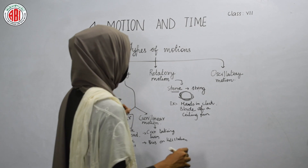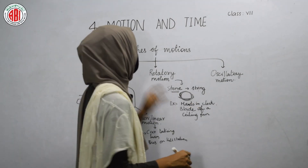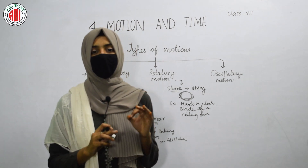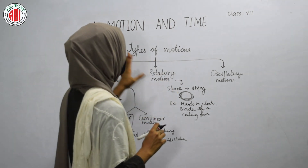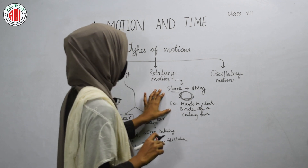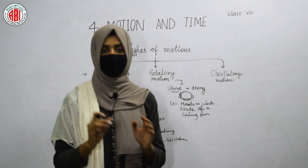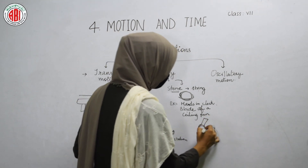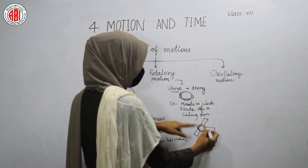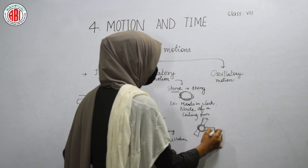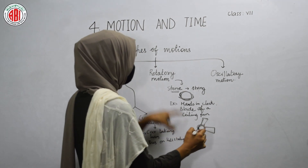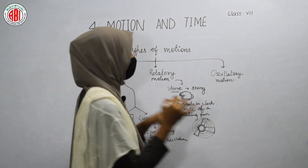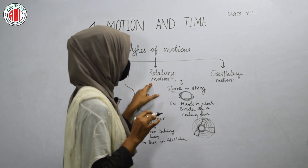Whenever an object moves in a circular path at a fixed center or axis, that type of motion is called rotatory motion. Take the example of the blades of a ceiling fan: the fan has a fixed axis which does not move — only the blades show movement, and they show circular movement. This circular movement or circular motion is called rotatory motion.